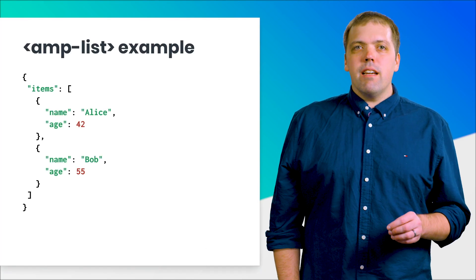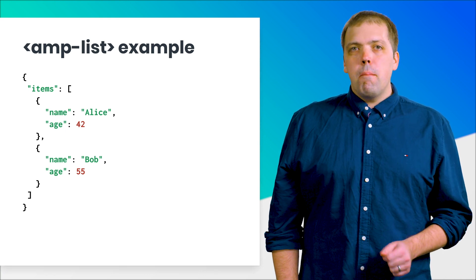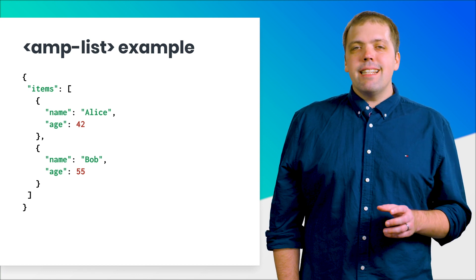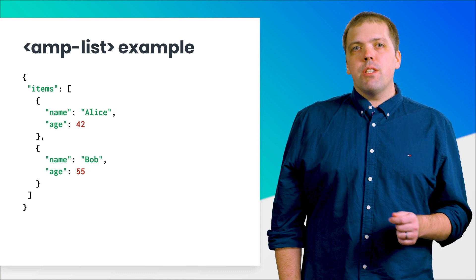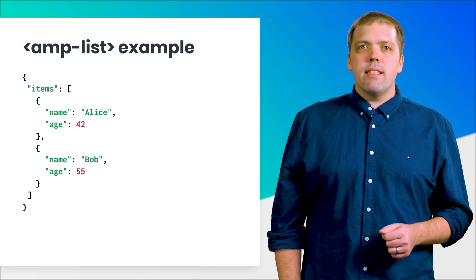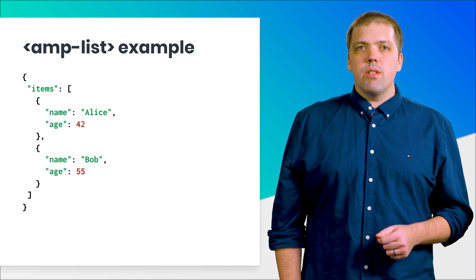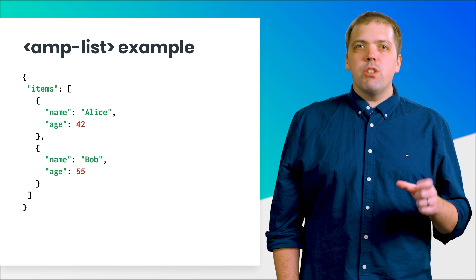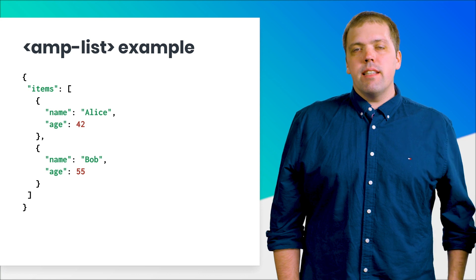This sample of JSON is an example of what the data from the previous example might have looked like when it came back from the server. By default, our AMP list expects the server to respond with a JSON object that contains a property named items. Items is an array of objects to apply to the template and display on the screen. The variables we use in our mustache templates refer to data in each item in the items array — we don't have to reference them into the array. The structure of the server data looks similar to the sample data shown here.